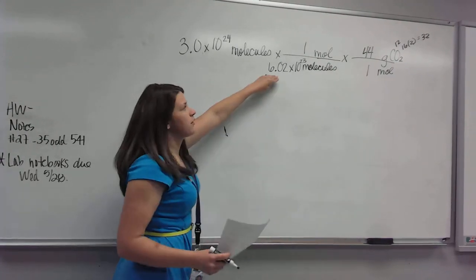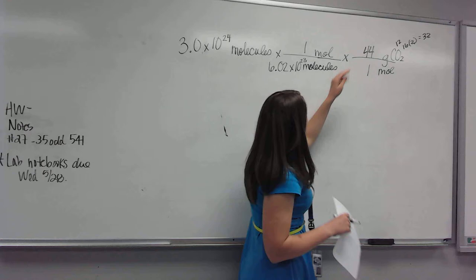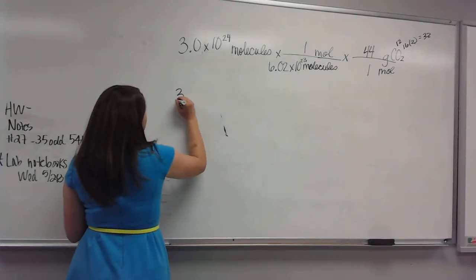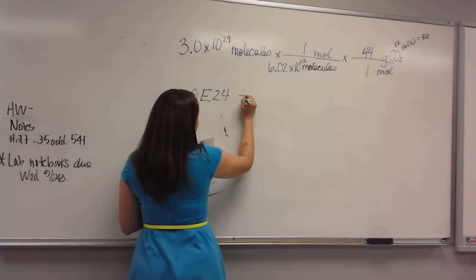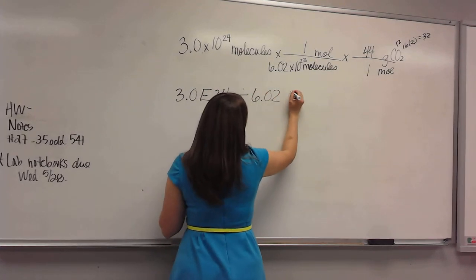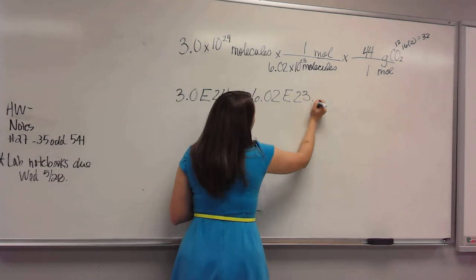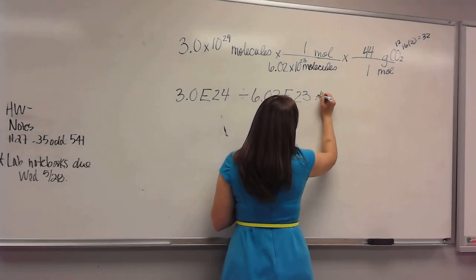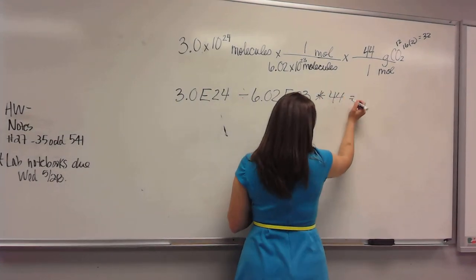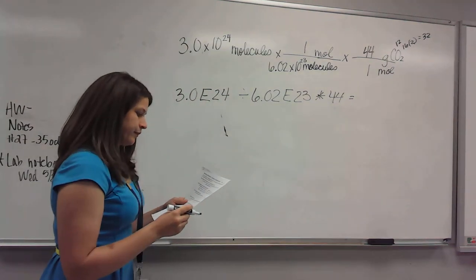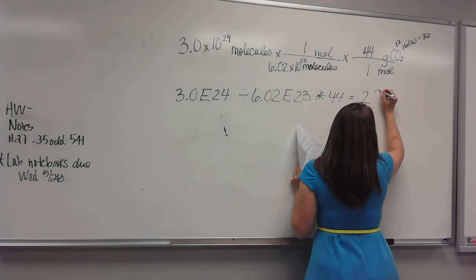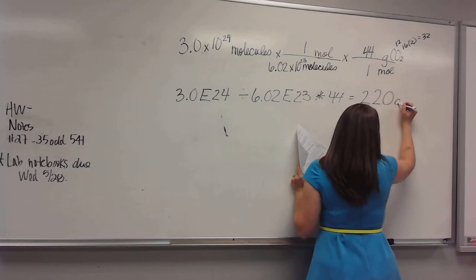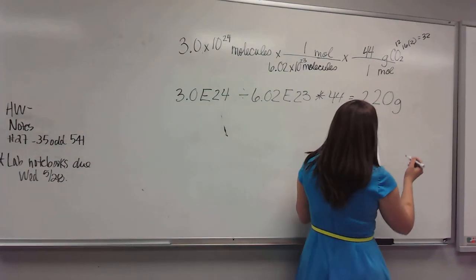Now, divide by everything that's on the bottom, multiply by everything that's on top. So when you type this in your calculator, it's going to be 3.0, that E key, 24, divided by 6.02 E to the 23rd, and then multiply by 44 and get an answer. I think you get 219 for purposes of significant digits. I rounded that to 220, but we won't be taking off for significant digits on the test.